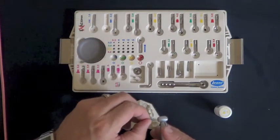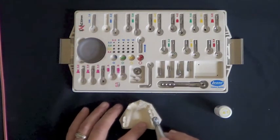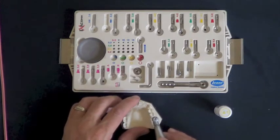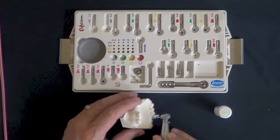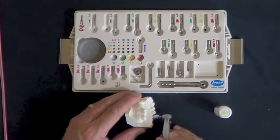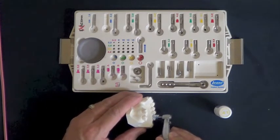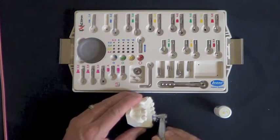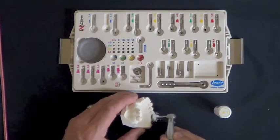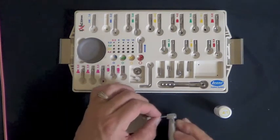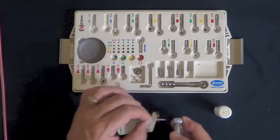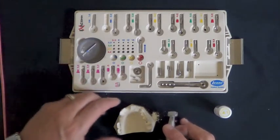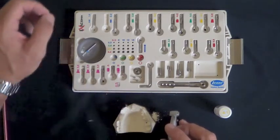Place that on the surgical handpiece, and then find the purchase, hit the pedal, and slowly direct that osteotomy down to the depth stop, which is the 10 millimeter mark. So that would be our initial pilot drill.